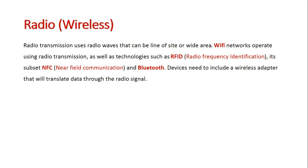Next we'll look at radio waves. Radio is basically used for our wireless technologies. We all know of radio towers giving out a signal, but it's also used for technologies such as Wi-Fi for home networks, as well as RFID and NFC, which we use for tap and go.